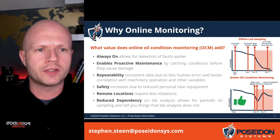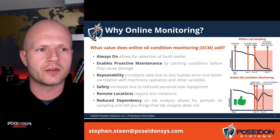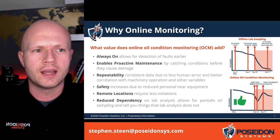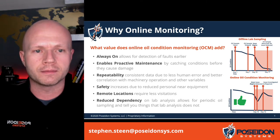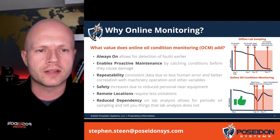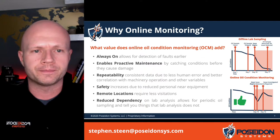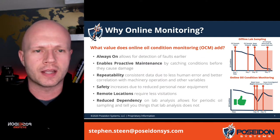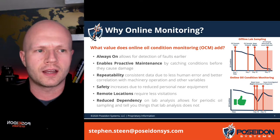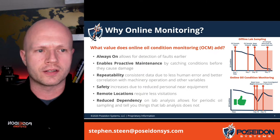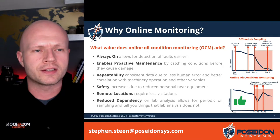With online sensors we take a lot of measurements, which helps with repeatability and less human error, as there's no human in the loop. We can also get correlations with different operations of the machine to see how using that vehicle or piece of equipment ends up causing damage or issues with the oil that you wouldn't see before. Because there's no human in the loop, there are safety increases — less personnel near equipment — and in some cases you may have very remote locations that would require fewer visitations, and dependency on oil lab analysis would go down.